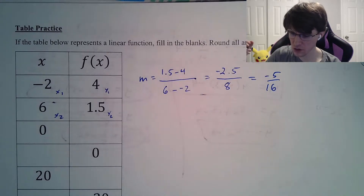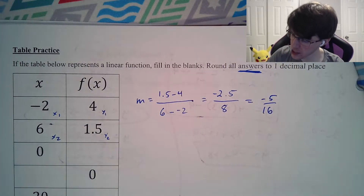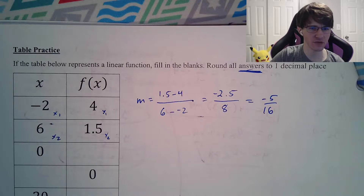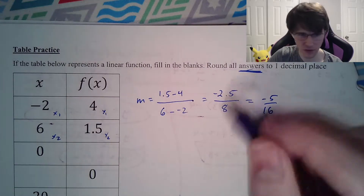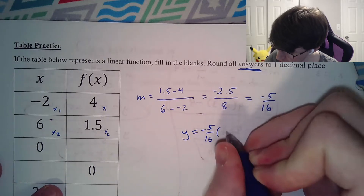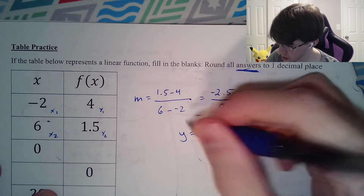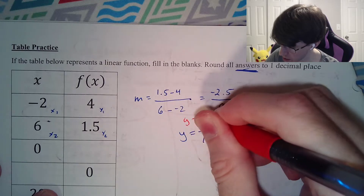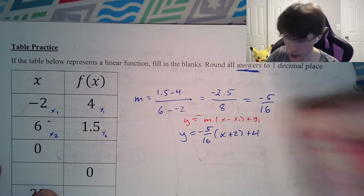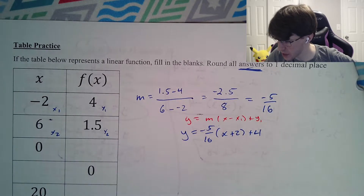You could have used the decimal version, but the problem is these are only answers and if you simply rounded to negative 0.3 early, you'll get the wrong answer. So you do need to leave it as negative 5 over 16 for now. Our equation is y equals negative 5 over 16 times x minus x1 plus y1, which gives us y equals negative 5 over 16 times x plus 2, plus 4.